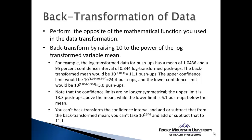The back transformed mean would be 10 to the power of 1.0436, which equals 11.1 push-ups. The upper confidence limit would be 10 to the power of the log transformed mean plus the confidence interval, giving us 24.4 push-ups. The lower confidence limit would be 10 to the power of the log transformed mean minus the confidence interval, giving us 5 push-ups.